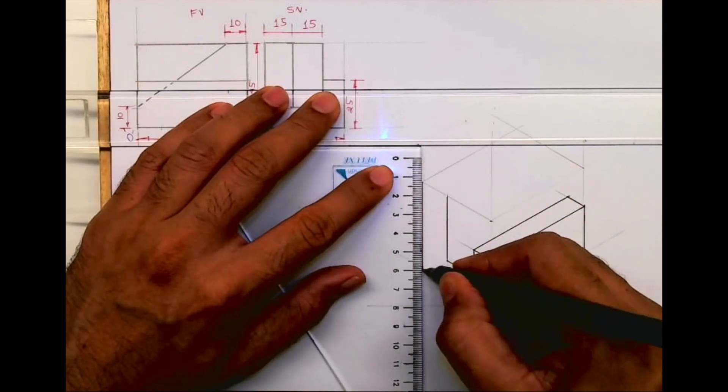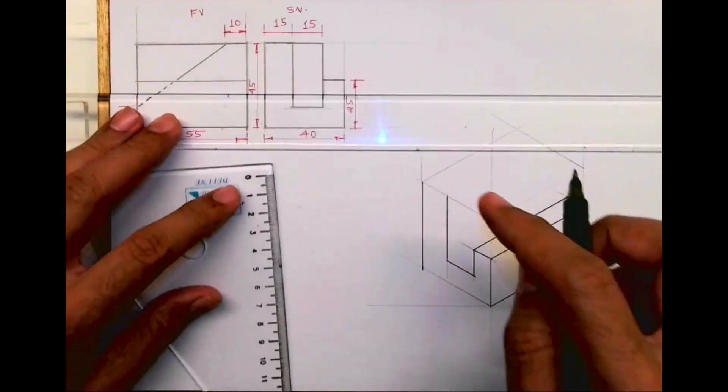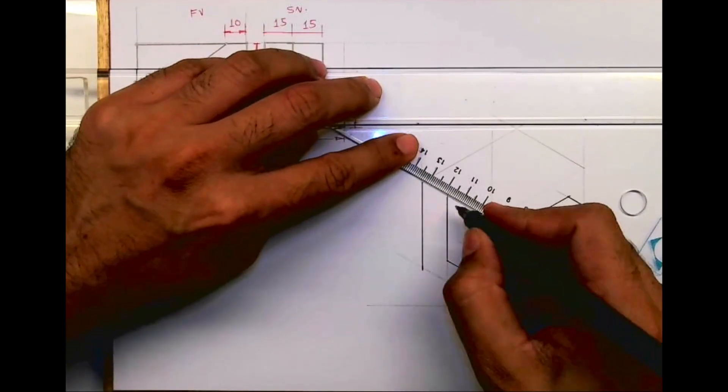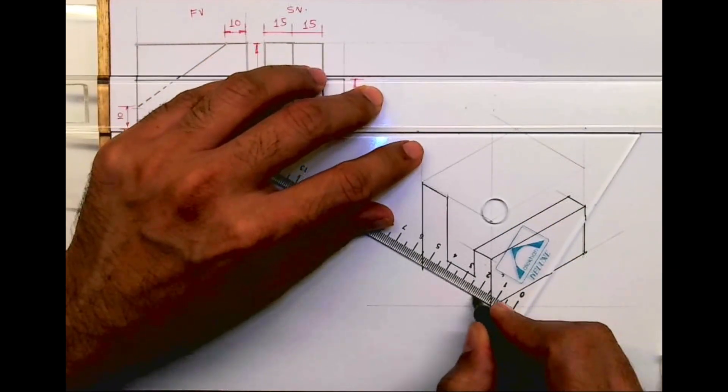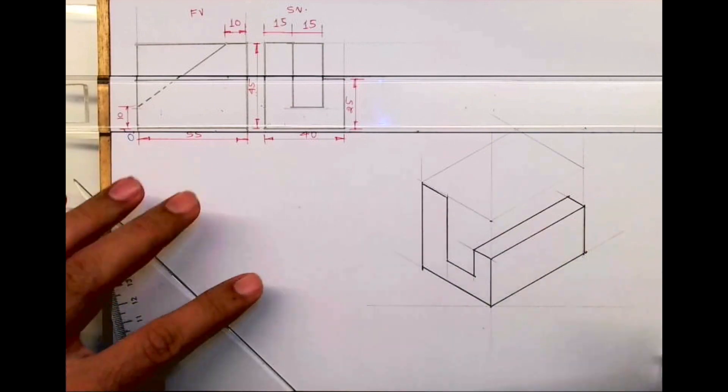Now what I'm assuming is whatever is there in the front, the same thing is behind. So whatever is there on the left, the same thing is on the right.